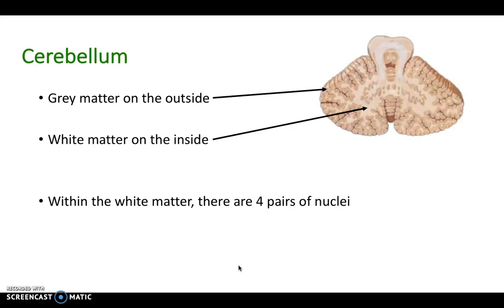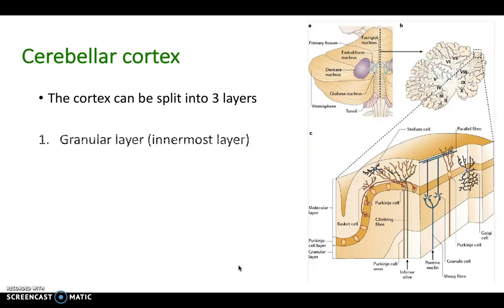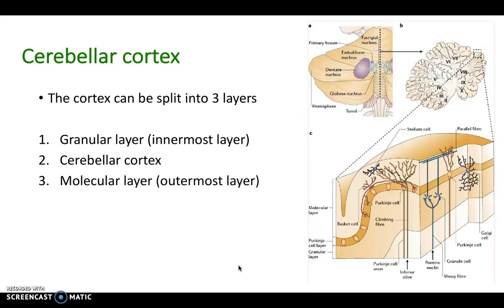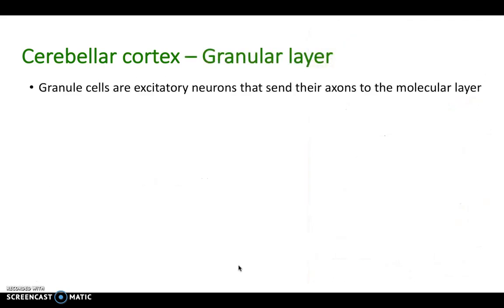The cerebellum has its gray matter on the outside and white matter on the inside, and within the white matter there are four pairs of nuclei. The cerebellar cortex can be split into three layers: the granular layer — the innermost — and the molecular layer — the outermost.